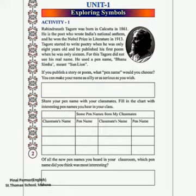We know that Rabindranath Tagore was a great poet who composed our national anthem, Jana Gana Mana, and won the Nobel Prize in Literature. He published his first poetry at the young age of 16 using a pen name. Some writers don't want to reveal their real name, so they use another name for publishing their books. Like writer William Sidney Porter used O. Henry as his pen name, and Gujarati writer Gauri Sankar Joshi used Dumketu as his pen name.